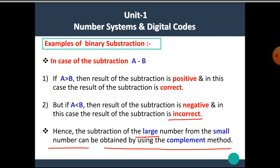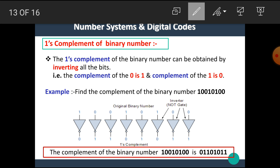There are mainly two complement methods: one's complement and two's complement. The question arises: what is meant by one's complement and two's complement? The one's complement of a binary number can be obtained by inverting all the bits. Inverting means the complement of 0 is 1, and the complement of 1 is 0.